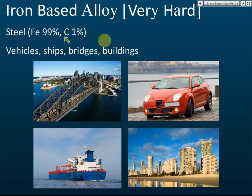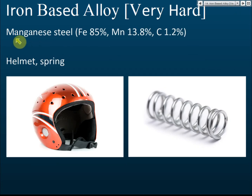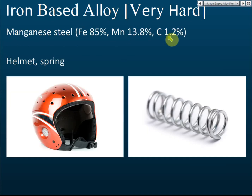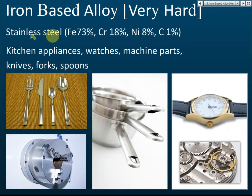Iron-base alloys: steel is very hard and strong, used to make bridges and buildings — there are steel bars inside buildings. The bodies of cars and ships are also made of steel. Manganese steel contains iron, carbon, and manganese. Carbon steel contains iron and carbon. Manganese steel is used to make helmets and springs.